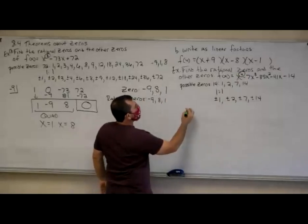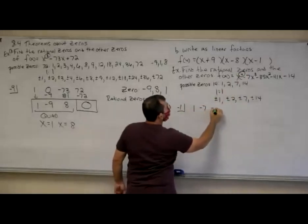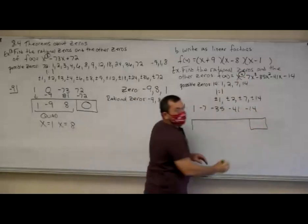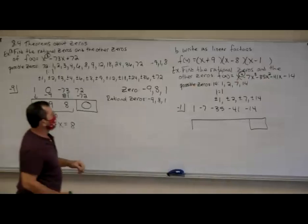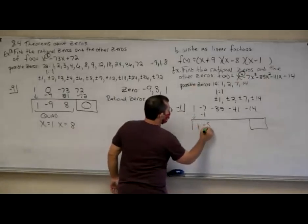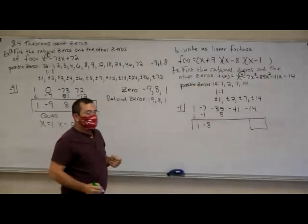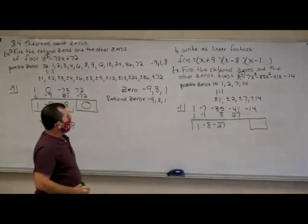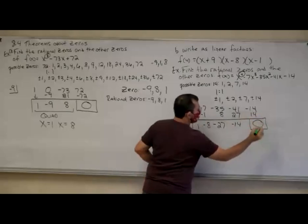So let's start with negative 1. Let me write the numbers out: 1, negative 7, negative 35, negative 41, negative 14. I didn't need to use placeholder zeros on this one because I didn't have any missing exponents. We're hoping for a zero remainder. Bring the 1 down, times negative 1 is negative 1, plus negative 7 makes negative 8. Times negative 1 makes positive 8. Negative 35 and 8 is negative 27, times negative 1 is positive 27. Negative 41 plus 27 is negative 14, and negative 14 times negative 1 is positive 14, which gives me a zero remainder.